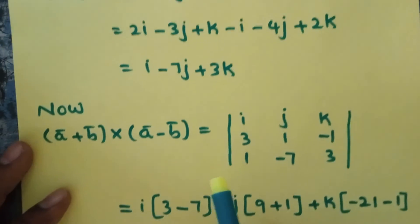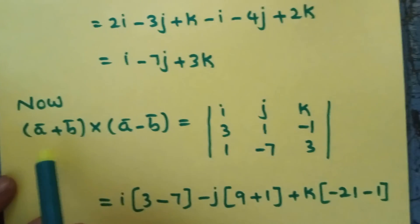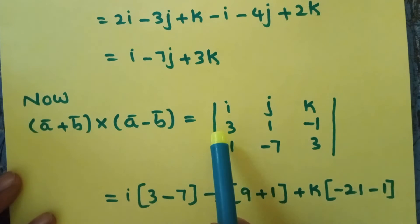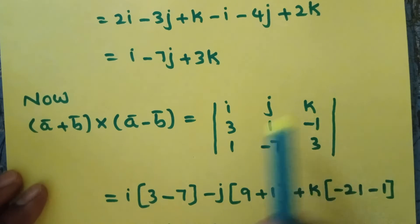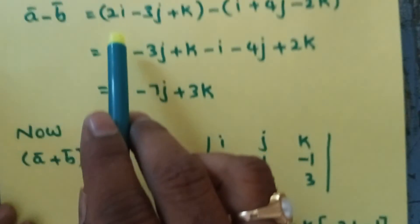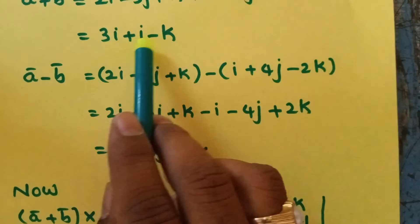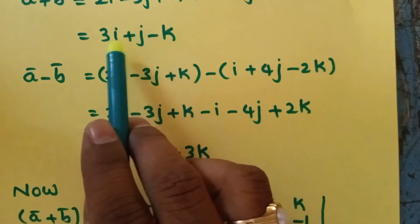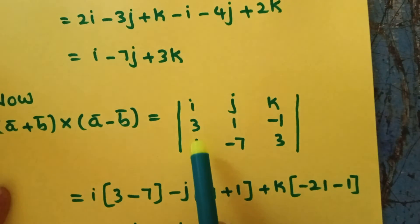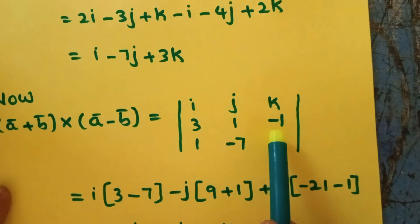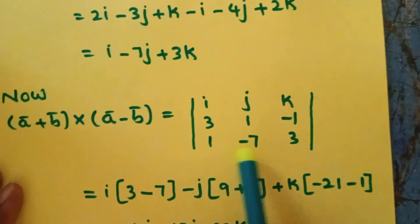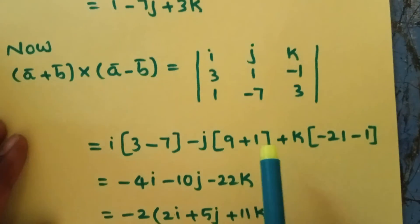After this, what is our question? Find the value of (A plus B) cross (A minus B). So here, setting up the determinant with i, j, k in the first row. A plus B components are 3, 1, minus 1. A minus B components are 1, minus 7, 3.